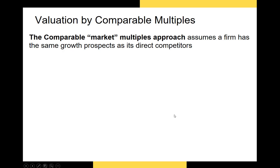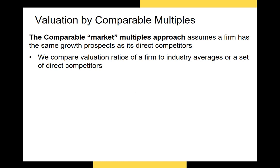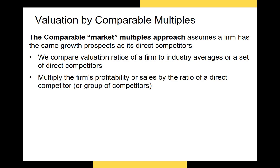Before we get into the discounted cash flows approaches, I'm going to focus on the market multiples approach, also called the comparable multiples approach. This approach assumes that a firm has the same growth prospects as its direct competitors. We compare the valuation ratios of one firm to either the industry average valuation ratios or those of its direct competitors, and determine whether our firm is more or less highly valued. We multiply our firm's profitability, sales, or some other metric by the valuation ratio of a competitor to get our intrinsic value.